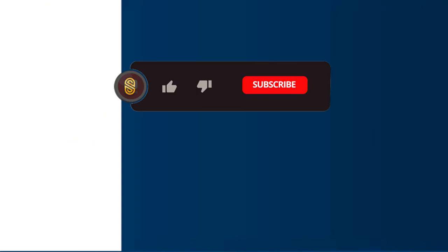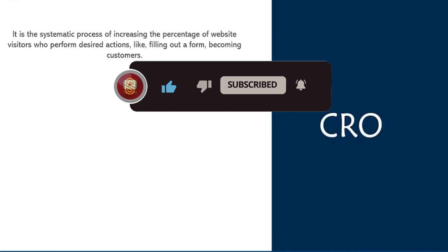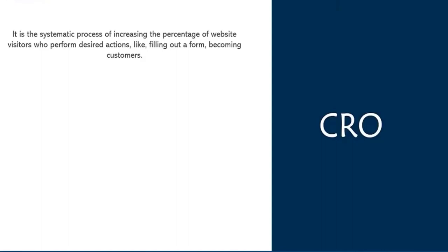Moving ahead, let's take a look at CRO, or conversion rate optimization. Conversion rate optimization is a systematic process of increasing the percentage of website visitors who perform desired actions, like filling out a form, becoming customers, and so on. The CRO process involves understanding how users move through your site, what actions they perform, and what barriers are stopping them from completing a task.